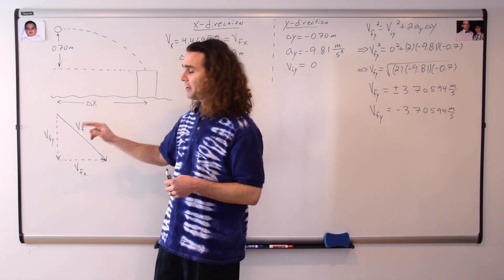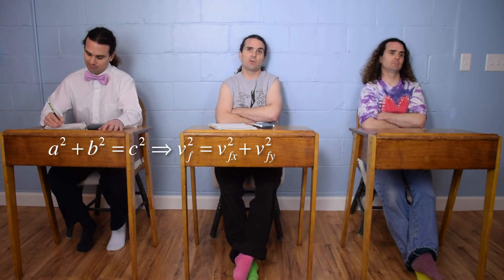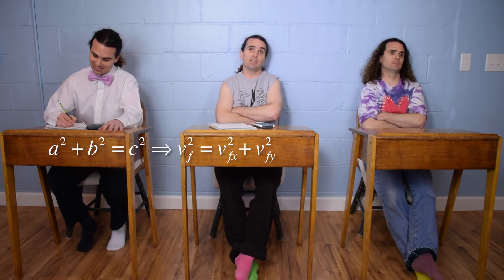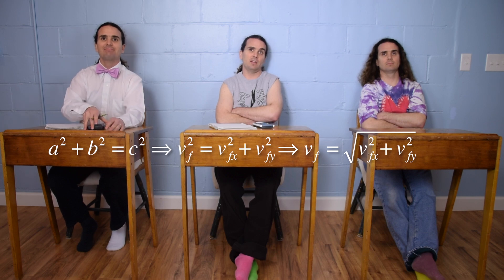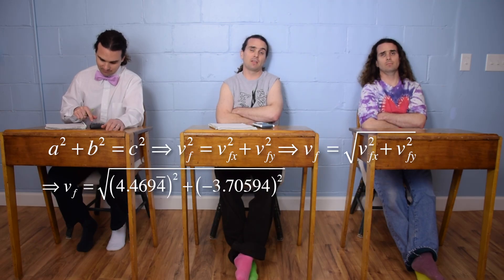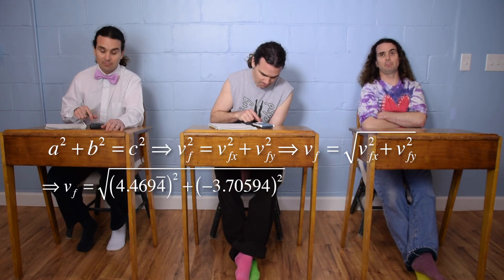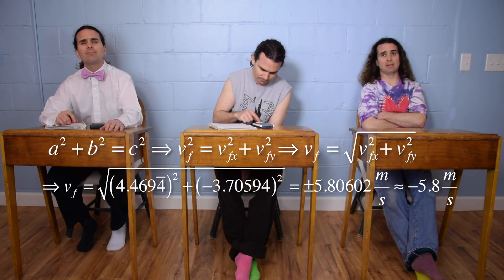Bobby, now that we have two sides of the triangle, please figure out the final velocity. We have two sides of our right triangle, so we can use a² + b² = c², or velocity final squared equals the velocity final in the x-direction squared plus the velocity final in the y-direction squared. Taking the square root gives us the velocity final equals the square root of velocity final x squared plus velocity final y squared. With numbers, that is the square root of 4.4694444 squared plus the quantity negative 3.70594 squared, which works out to positive or negative 5.80602 — with sig figs, 5.8 meters per second.